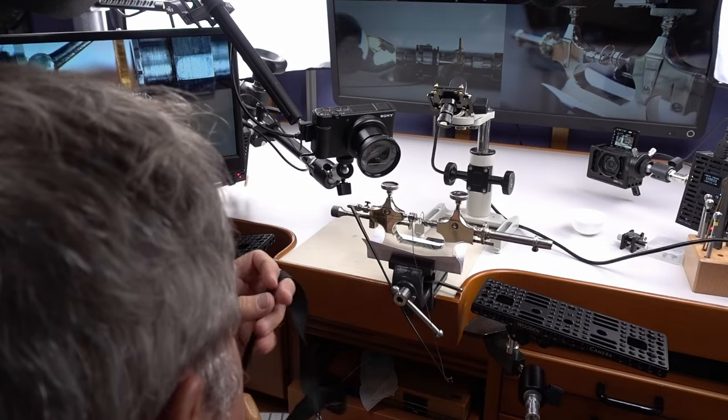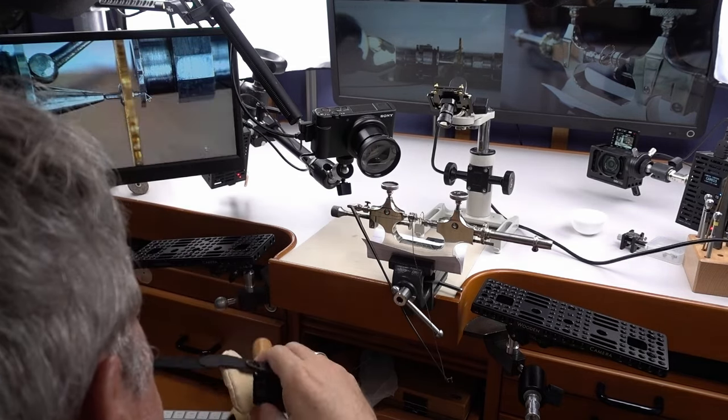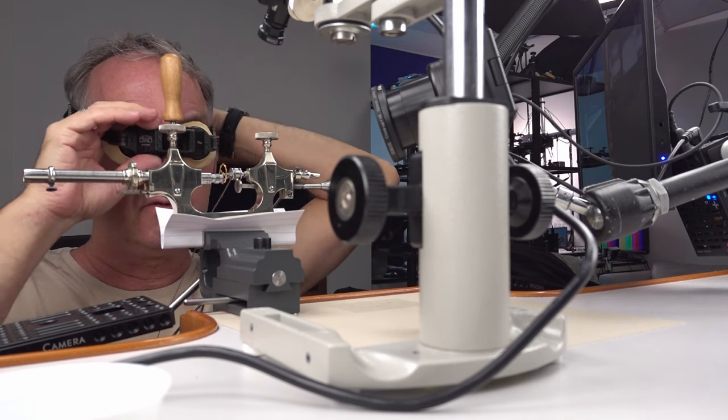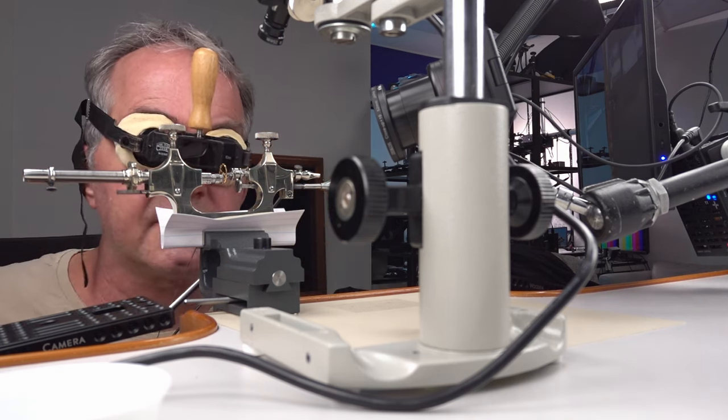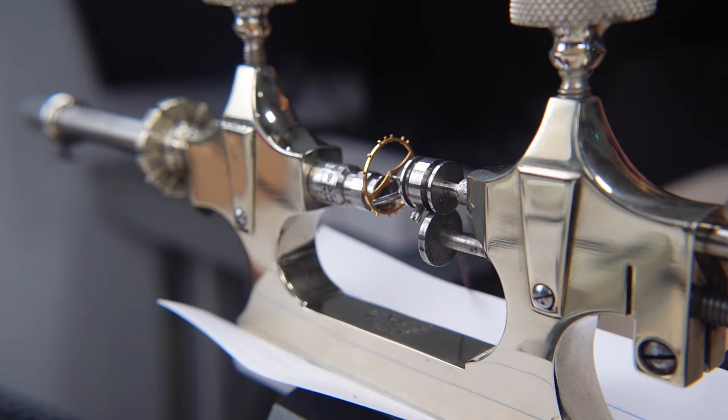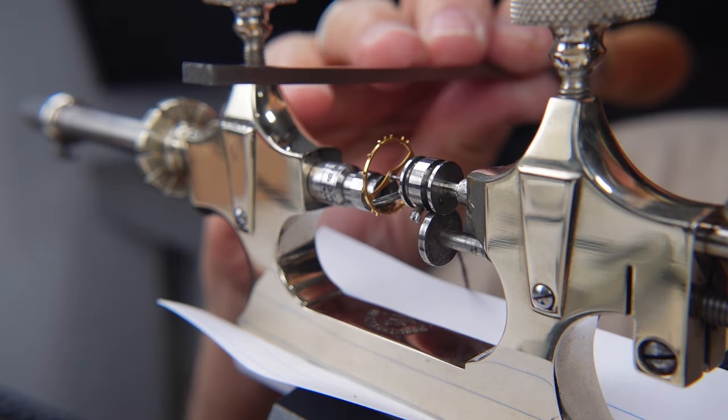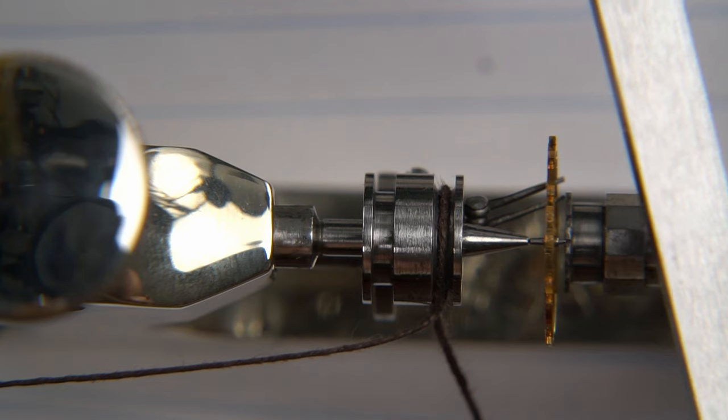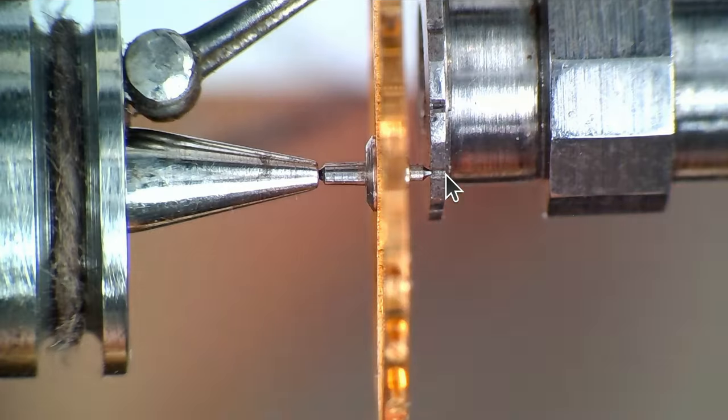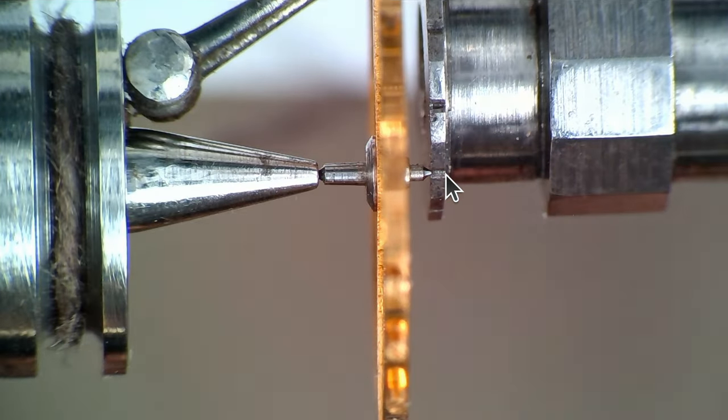So I just was setting up this Jacko tool. I've been, I have a smaller balance. I want to actually polish, but I don't want to break it because it actually belongs to a watch. So this is a kind of dummy balance.